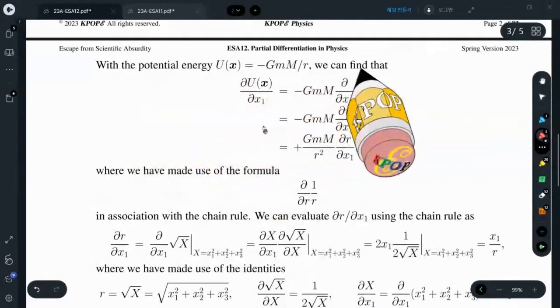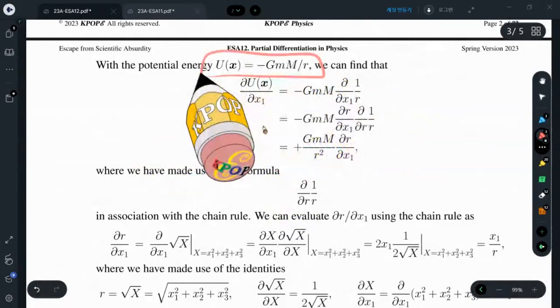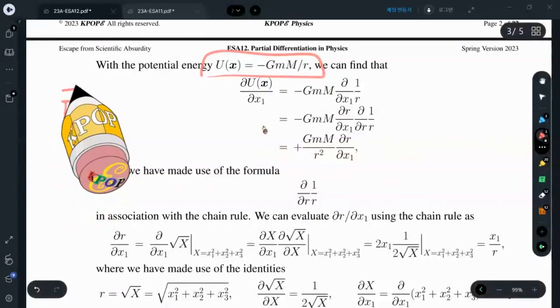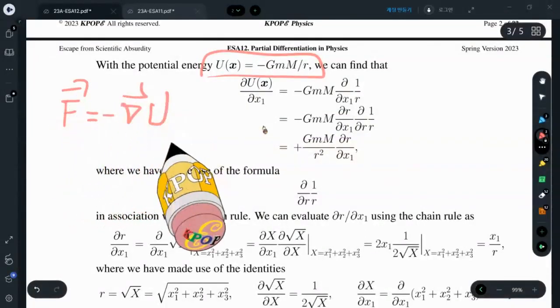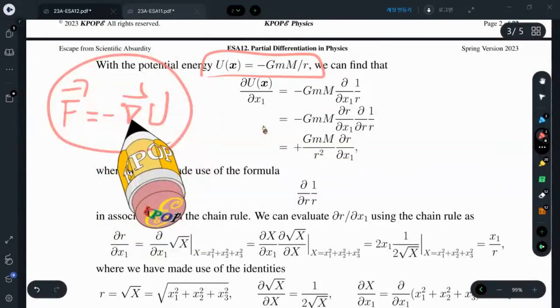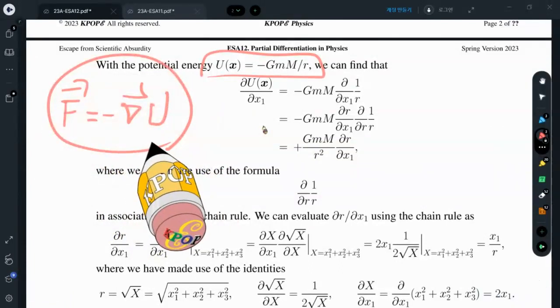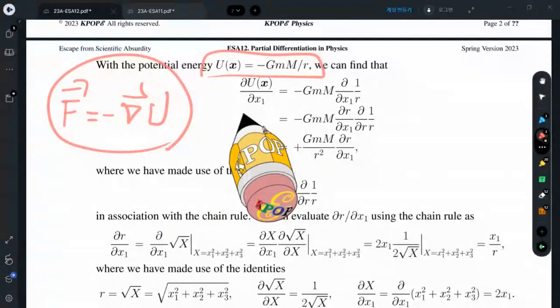If I have a potential energy and want to compute the force, I need to take the derivative and put the negative sign on it. Force is minus gradient of potential energy. We always have to evaluate the partial differentiation.